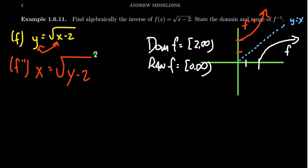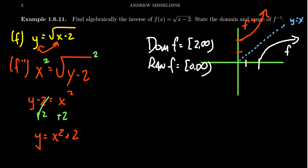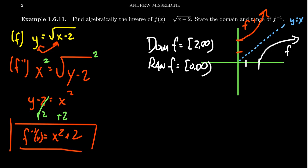To get rid of the square root function, we apply its inverse and square both sides. This gives us that y minus 2 is equal to x squared. Then we add 2 to both sides, which gives us y equals x squared plus 2. When we say y here, we're really putting in the name of the inverse function f inverse. So the formula for our inverse function is f inverse of x equals x squared plus 2.